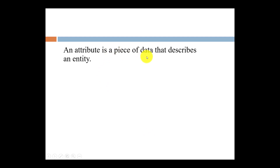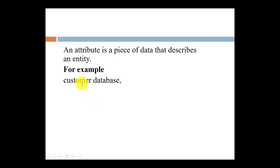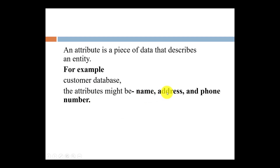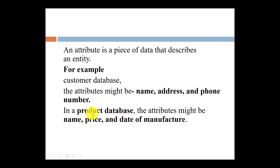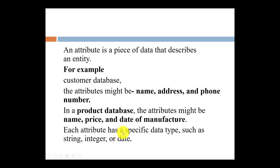An attribute is a piece of data or value which describes or gives the description of an entity. For example, suppose customer is an entity — a customer can be described by values like customer name, address, phone number, etc. Similarly, product is an entity that can be described by values like name, price, date, etc. Each attribute has a specific data type such as string, integer, or date. For example, name can be stored as a string, price as an integer, and date as the date data type.